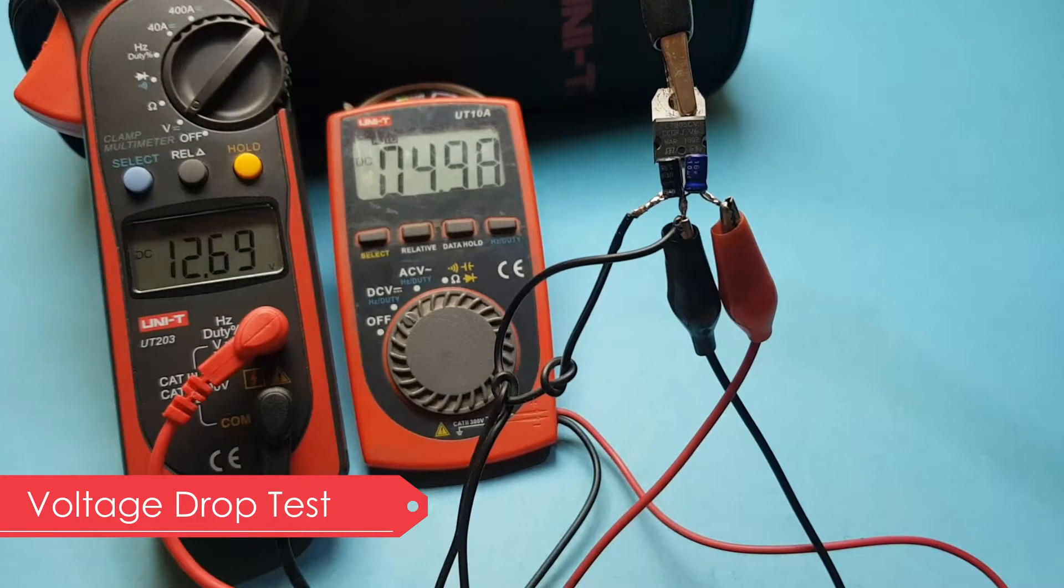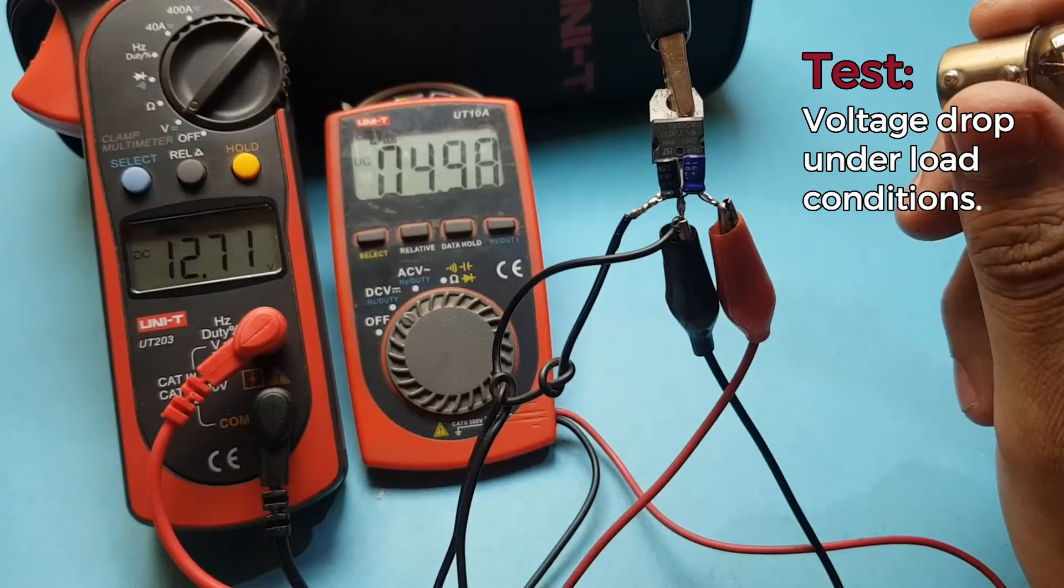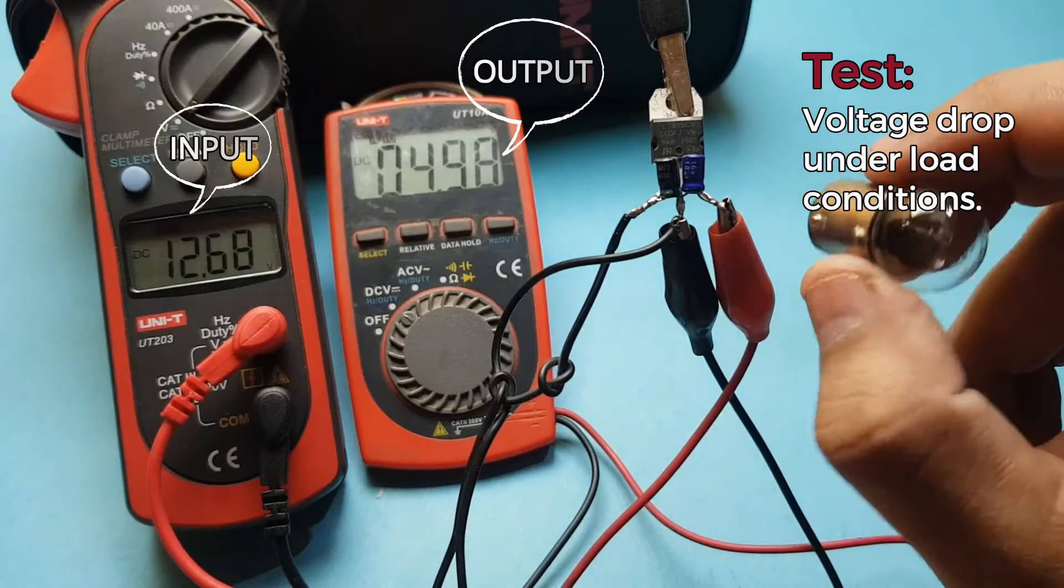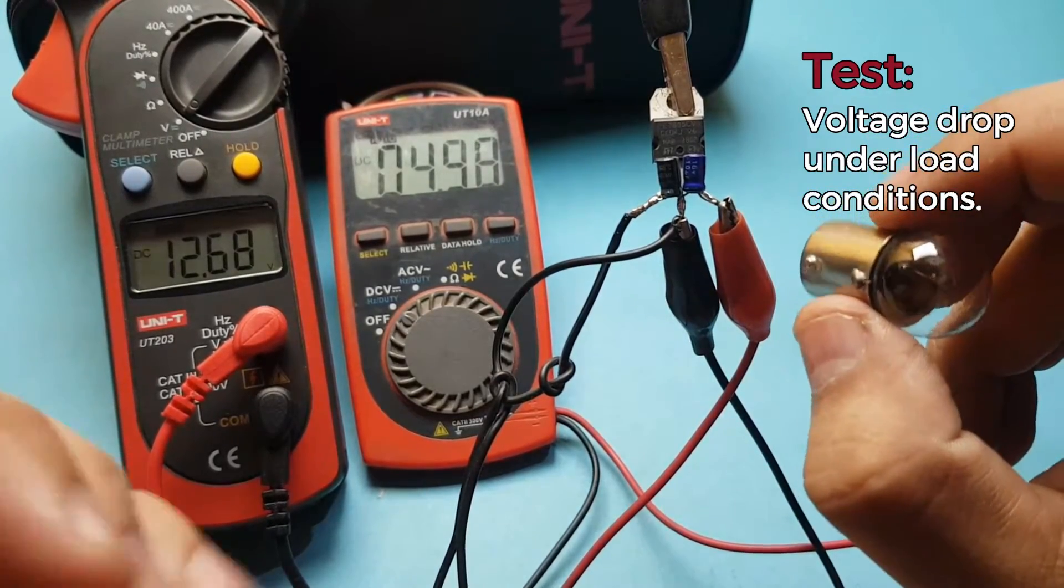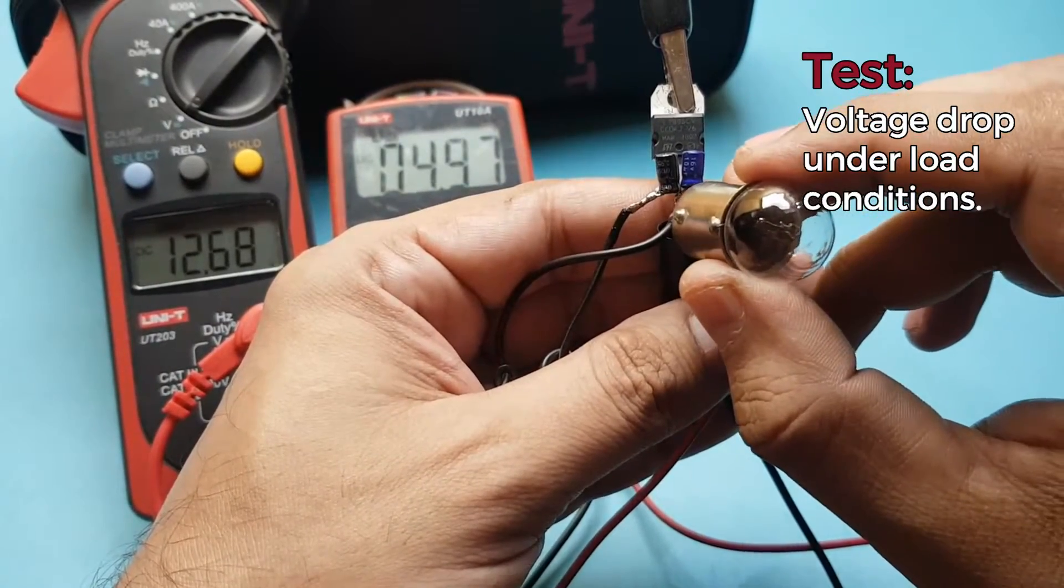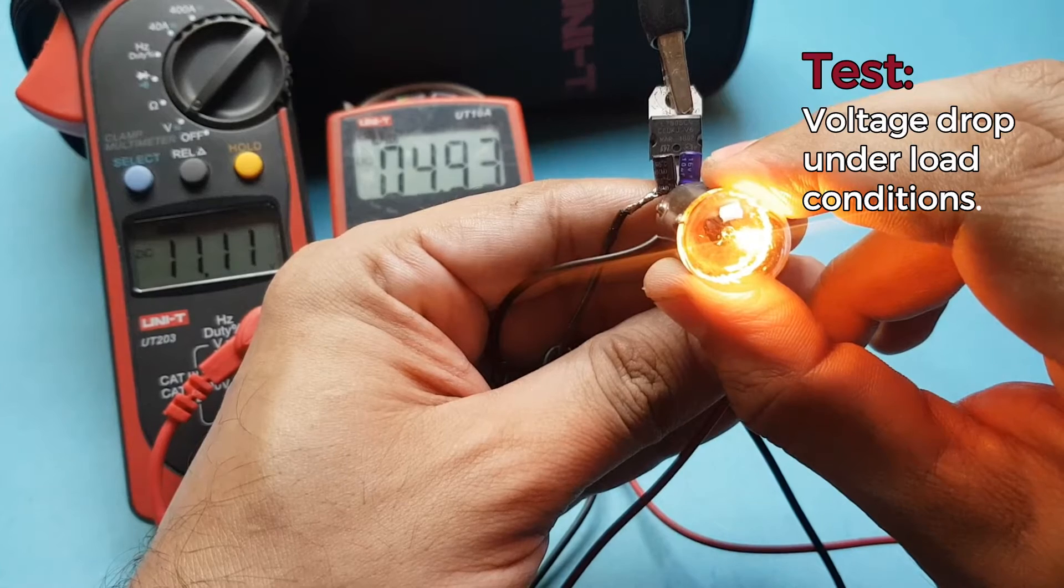I have attached two multimeters with my LM7805. The left one is showing the input volts. Let's put some load on our IC and see the voltage drop on both sides.